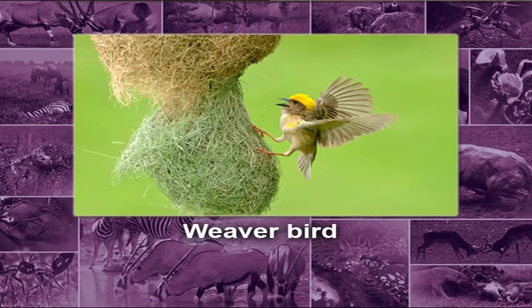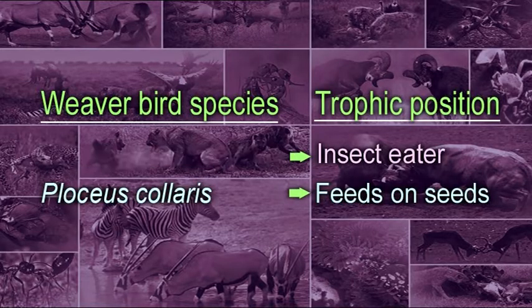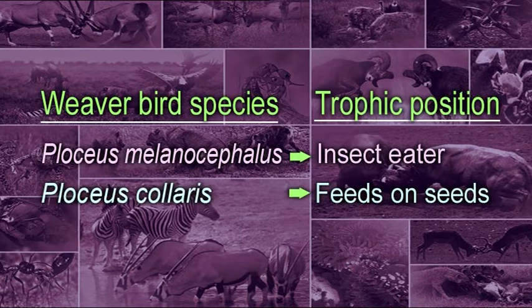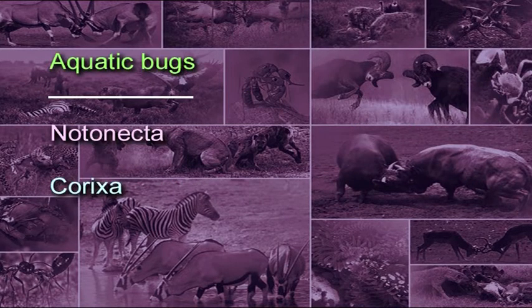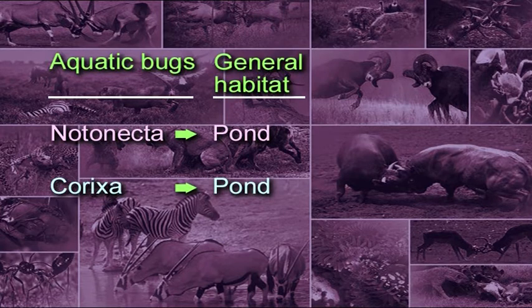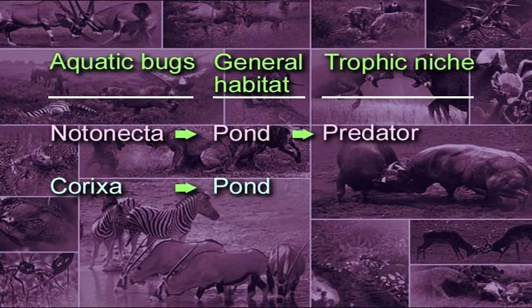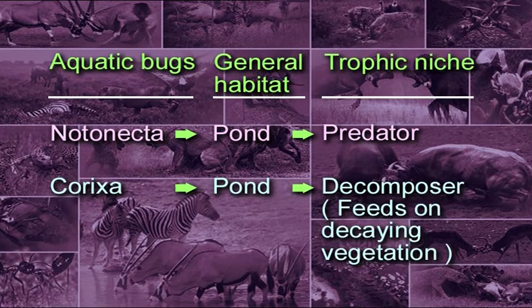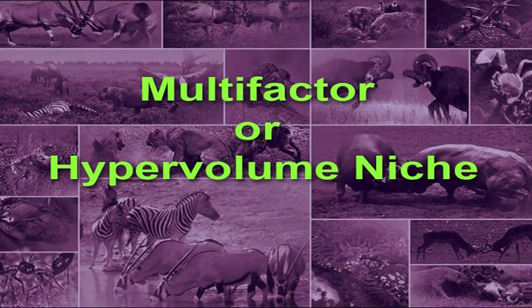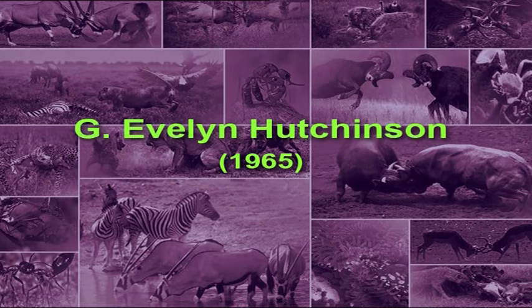Similarly, the occurrence of weaver birds in the vicinity of Lake Meru in Africa is another example of trophic niche. All three weaver bird species differ in their food choice, occupying different trophic niches. Two of them — Ploceus melanocephalus and Ploceus collaris — live in the same nest, one being an insect eater and the other feeding on seeds. Another example is two aquatic bugs, Notonecta and Corixa, which live in the same pond but occupy different trophic niches: Notonecta is an active predator, whereas Corixa feeds largely on decaying vegetation.